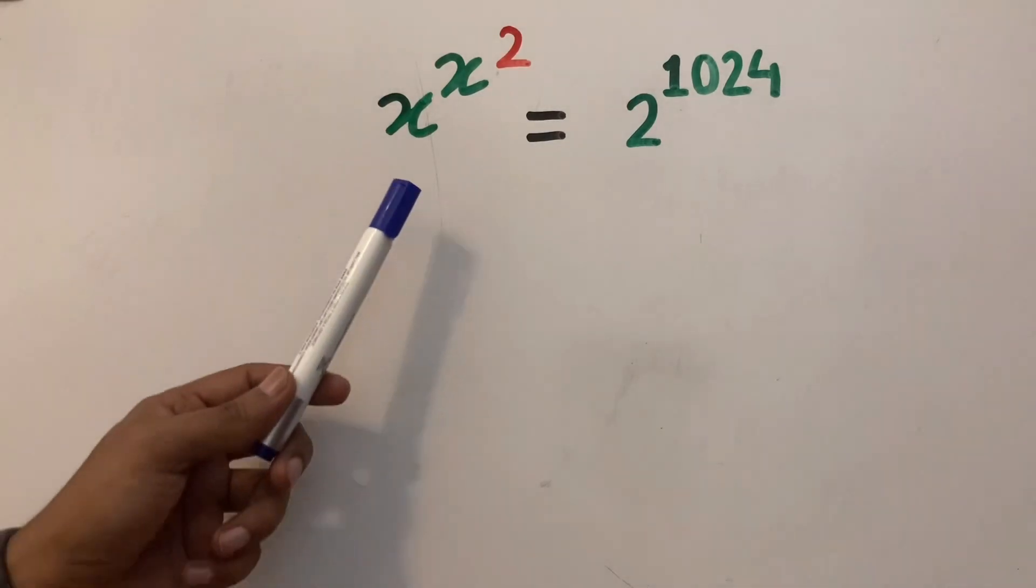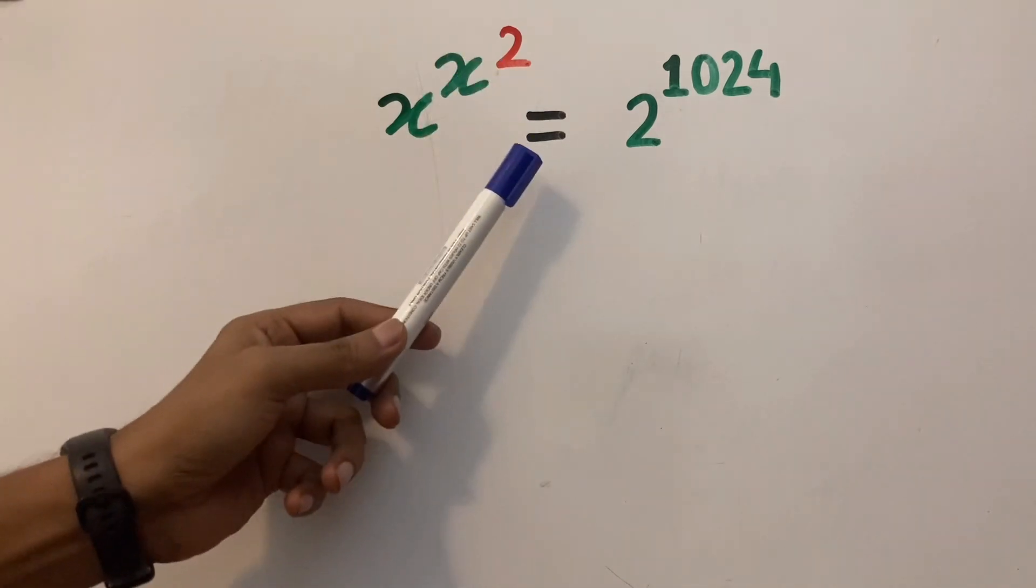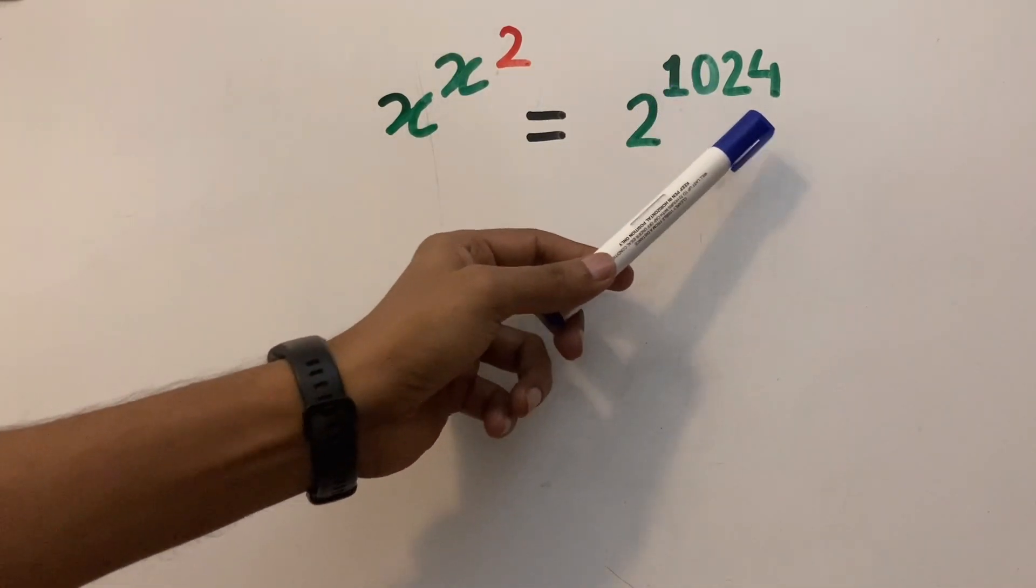Welcome back to MathX. Solve this equation: x to the power x to the power 2 equals 2 to the power 1024.